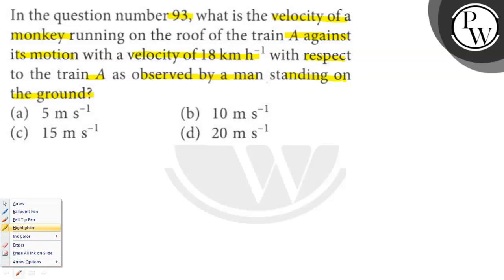In the question, this is a train A running in the north direction and the speed of the train A is 54 km per hour which is given in question number 93. On the roof,